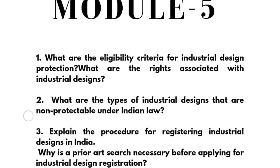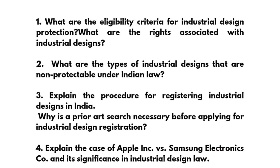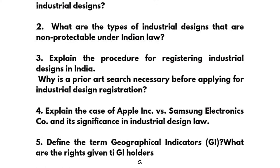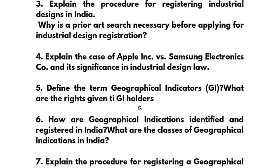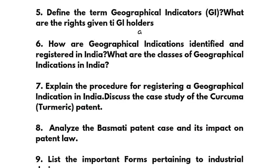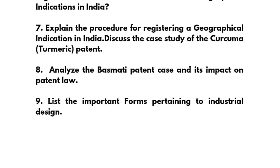Coming to Module 5, we again have ten questions: what are the eligibility criteria for industrial design protection; what are the rights associated with industrial designs; what types of industrial designs are non-protectable under Indian law; explain the procedure for registering industrial designs in India; why is a prior art search necessary before applying for industrial design registration; explain the case of Apple versus Samsung Electronics and its significance in industrial design law; define geographical indications and what are the rights given to GI holders; how are geographical indications identified and registered in India; what are the classes of geographical indications in India; explain the procedure for registering a GI in India; discuss the case study of the Curcuma (turmeric) patent; analyze the Basmati patent case and its impact on patent law; and list the important forms pertaining to industrial design.